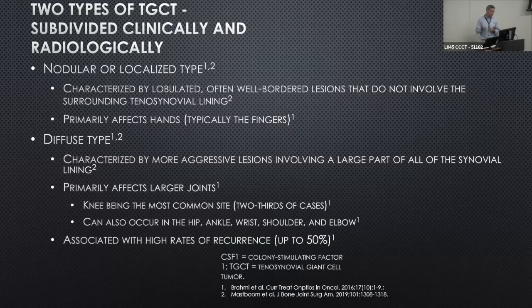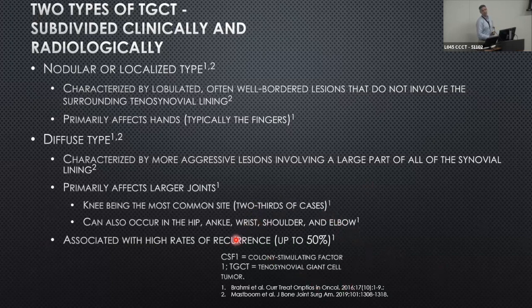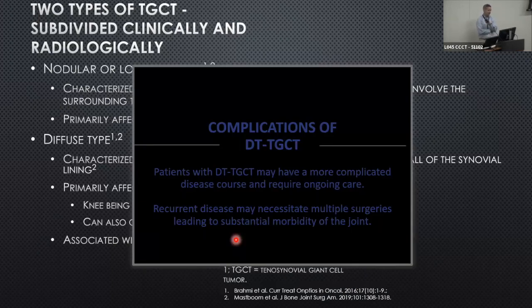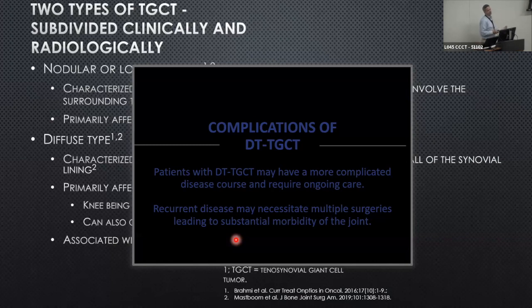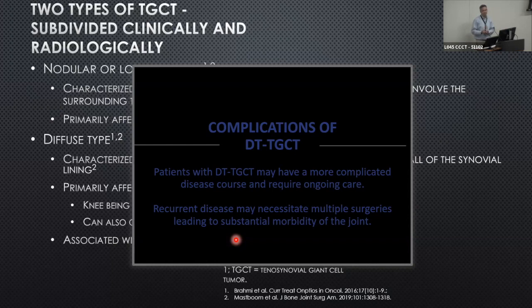The primary focus today is the diffuse type. It primarily affects the knee, though it can occur anywhere. The biggest challenge is that with optimum treatment of diffuse disease, we're looking at up to a 50% recurrence rate. Patients with diffuse TGCT can have a long, prolonged clinical course with multiple treatment options, multiple failed treatments, and multiple surgeries that lead to substantial joint morbidity — even if you eventually get ahead of the TGCT. You can rid yourself of the disease, but because it took three synovectomies, you may still have a painful, stiff joint.